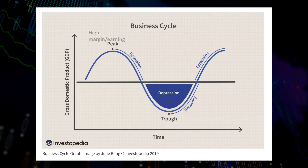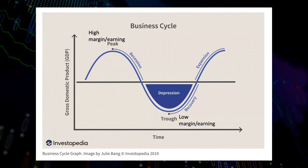Since companies usually report high margins and earnings during up-cycles, all else being equal, the regular P/E will be low during cyclical peaks, sending out buy signals for value strategies. Similarly, during margins and earnings crashes at cyclical bottoms, the regular P/E will be artificially high and give out sell signals for value strategies.